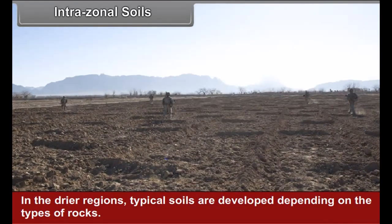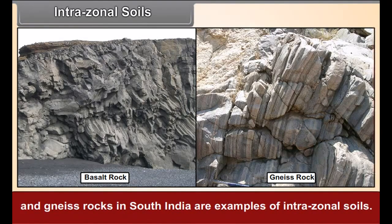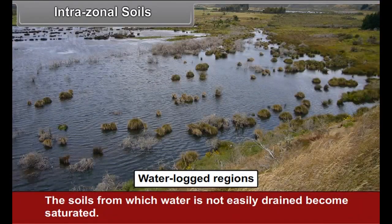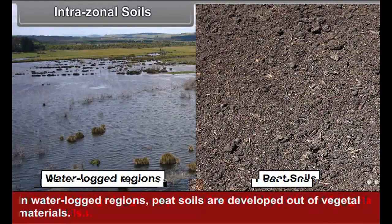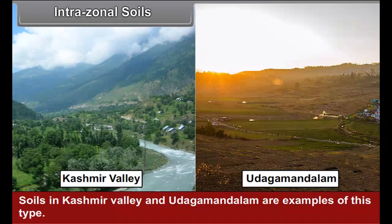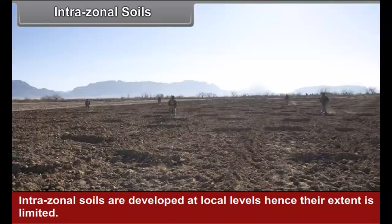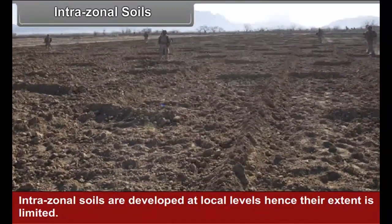Intrazonal soils: in drier regions, typical soils are developed depending on the types of rocks. Soils developed on basalt rock in Maharashtra, and red soils developed on granite and gneiss rocks in South India, are examples of intrazonal soils. In waterlogged regions, peat soils are developed out of vegetal materials — soils in Kashmir Valley and Udagamandalam are examples of this type. Intrazonal soils are developed at local levels; hence their extent is limited, and their distribution is not generally shown on a world map.